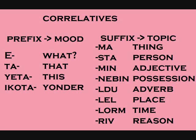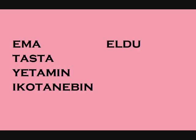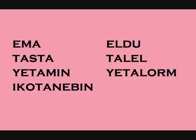For examples: 'emma' (what), 'tasta' (that person), 'yetamin' (this [adjective form]), 'icotanebin' (yonder person's), 'eldu' (how / in what way), 'talel' (there), 'yetalorm' (at this time), and 'icotari' (for yonder reason). Not all of these will make sense most of the time, but in theory any prefix can be put with any suffix.